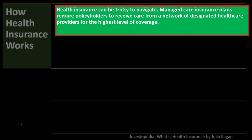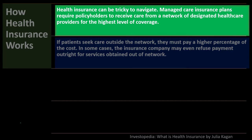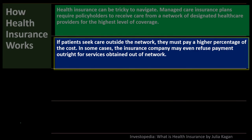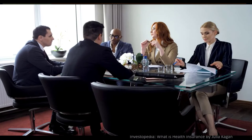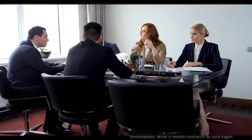Health insurance can be tricky to navigate. Managed care insurance plans require policyholders to receive care from a network of designated healthcare providers for the highest level of coverage. There will typically be some kind of network that gives limitations to the healthcare we can seek under that plan. If patients seek care outside the network, they must pay a higher percentage of the cost, and in some cases the insurance company may even refuse payment outright for services obtained out of network.